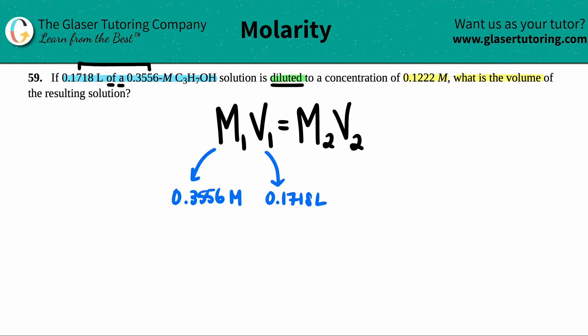Now we just have to find out what the other pair is. This is being diluted to a concentration of 0.1222 molarity, so that's this guy. So this number is 0.1222 molarity. And they're actually asking for what is the volume of the resulting solution of this concentration. So we're solving for V2. When we don't know something, we label it as X, or you could put V. It's just got to be a variable.